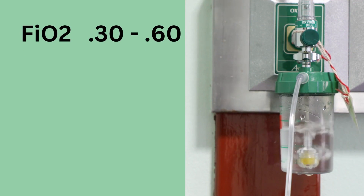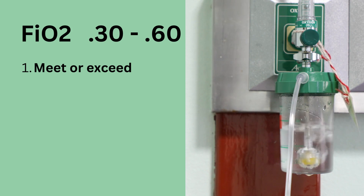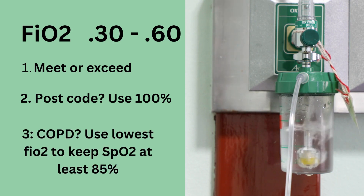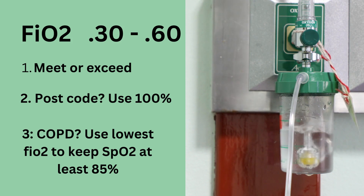For FiO2, we recommend 30 to 60% as a general guideline with three caveats. First, always meet or exceed the FiO2 the patient was already receiving — if they were on a 50% Venturi mask, start them on 50% on the ventilator. Second, post-code or post-emergency, begin with 100% FiO2 and wean as able. Third, for COPD patients, use the lowest FiO2 necessary to keep their SpO2 at least 85%.